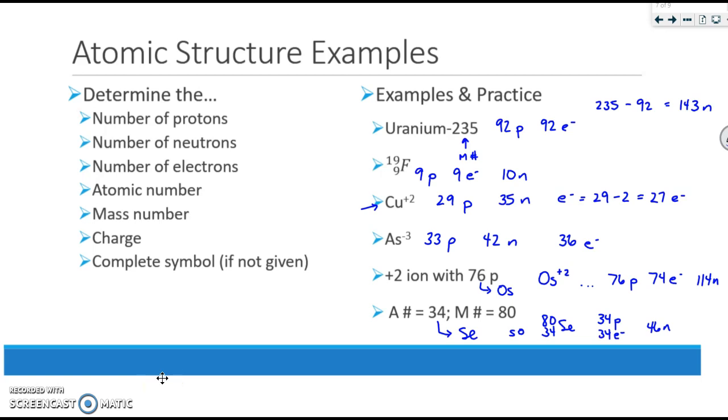Please check your answers. Again, to calculate neutrons, you're taking the mass number minus the atomic. And to find electrons, you're taking the protons minus the charge. If no charge is provided, it is an atom, and therefore the protons and electrons are the same.